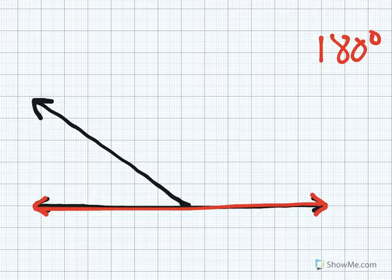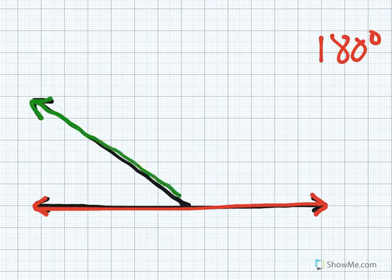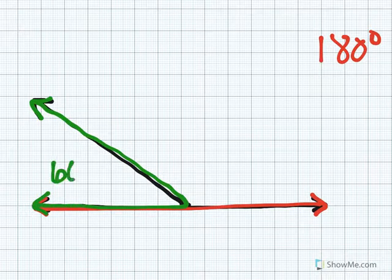I'm going to outline the first angle in green. They give us the measurement of the first angle. The angle outlined in green measures 60 degrees.